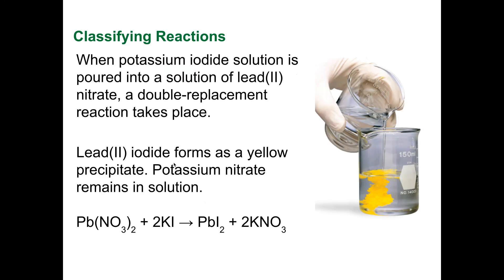When potassium iodide solution is poured into a solution of lead nitrate, a double replacement reaction takes place. Lead iodide forms as a yellow precipitate, and potassium nitrate remains in the solution.